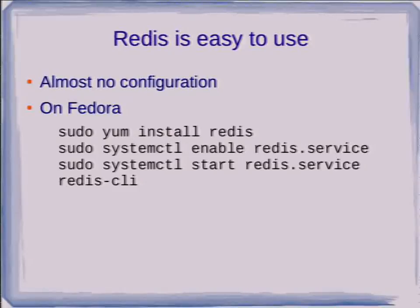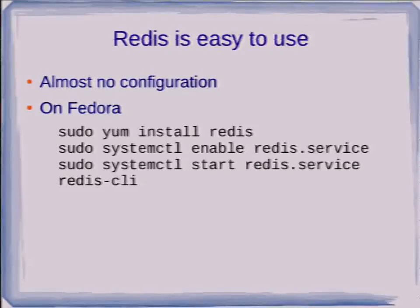It has almost no configuration required to set it up. Those are the commands you need on a recent Fedora instance to install it, run it, and get into talking to it — the last is just the command line client for talking to Redis. That's all you have to do. When you get to production you're going to tune it a bit, principally how much memory it uses, but to start off with that's all you need. It's very, very simple.